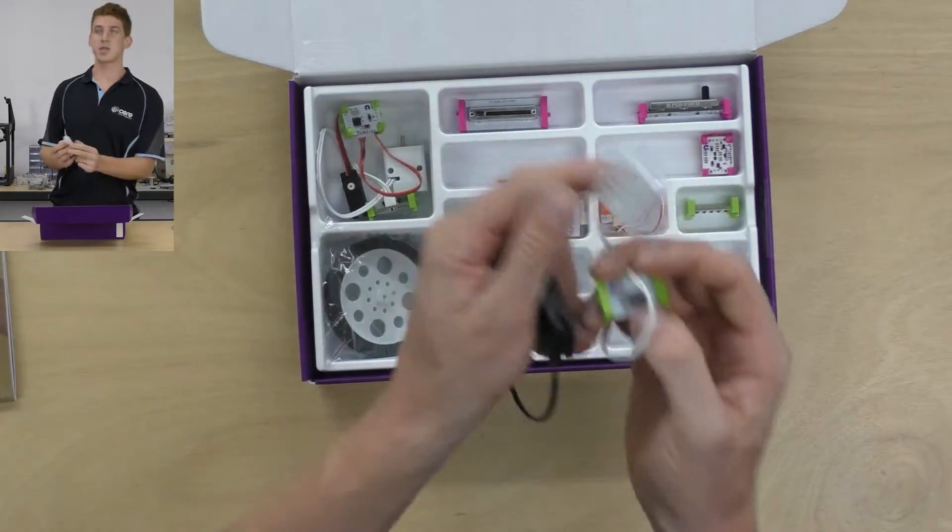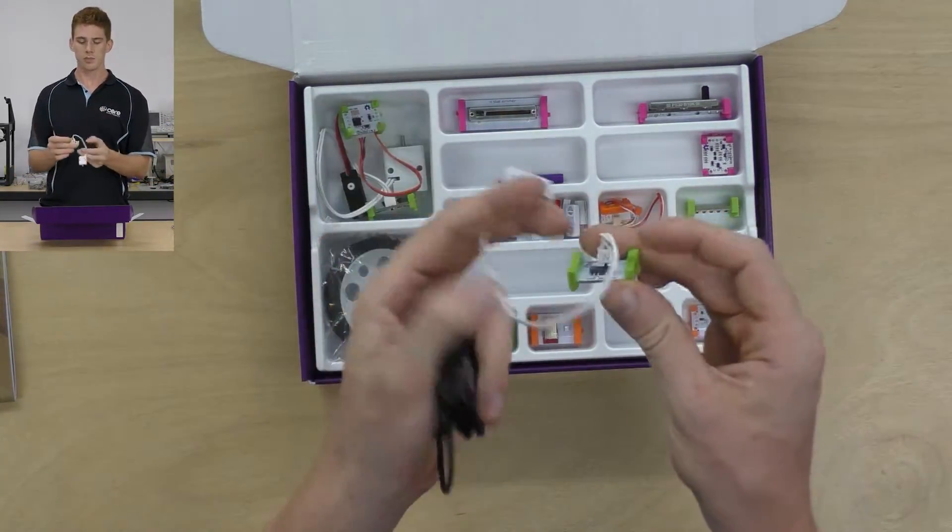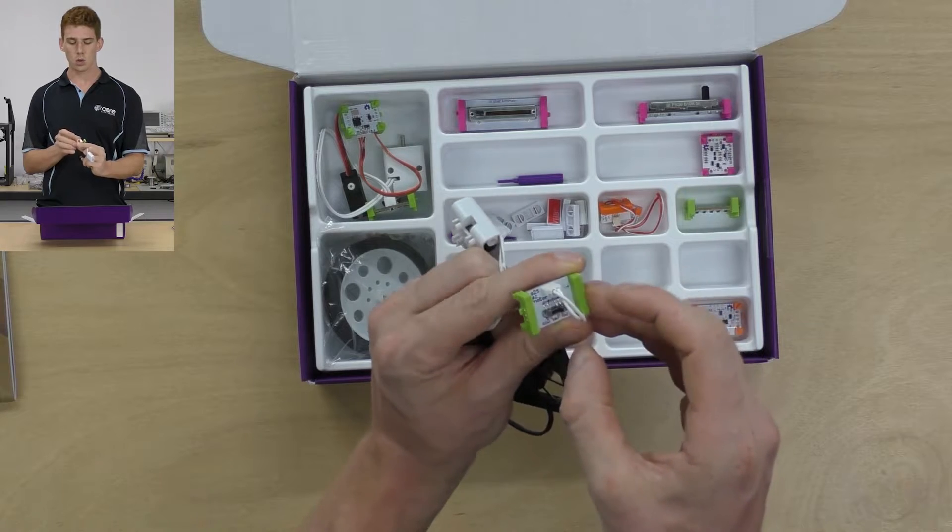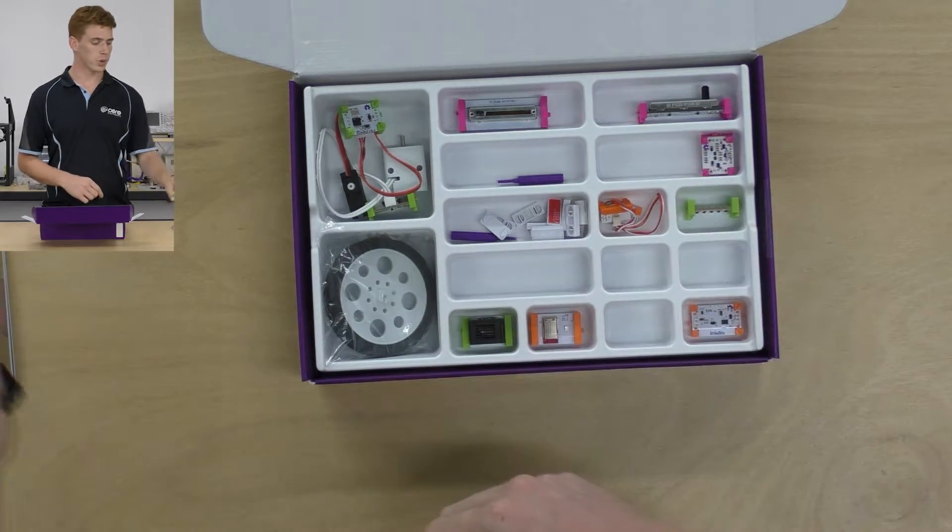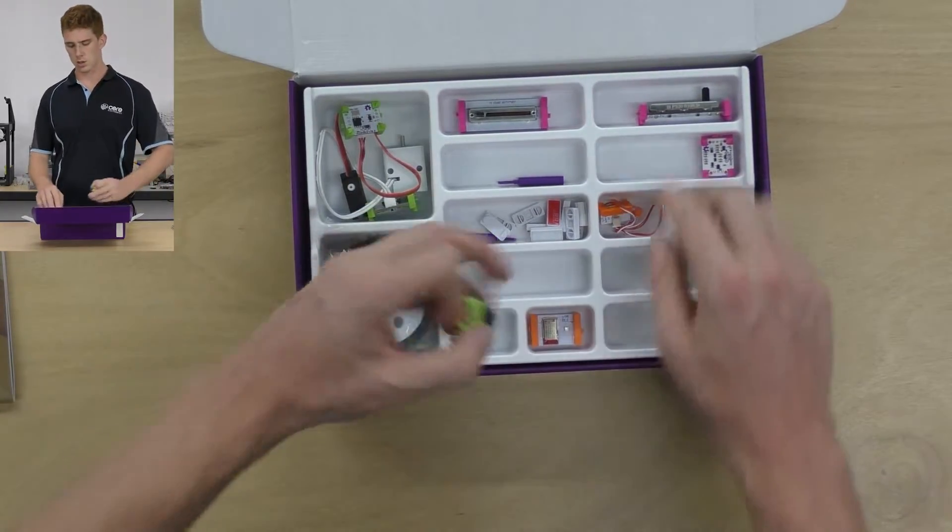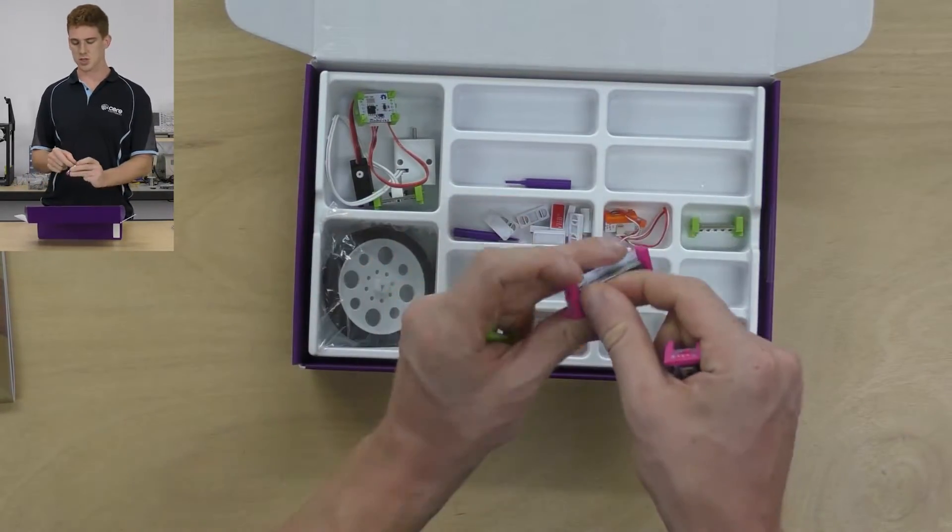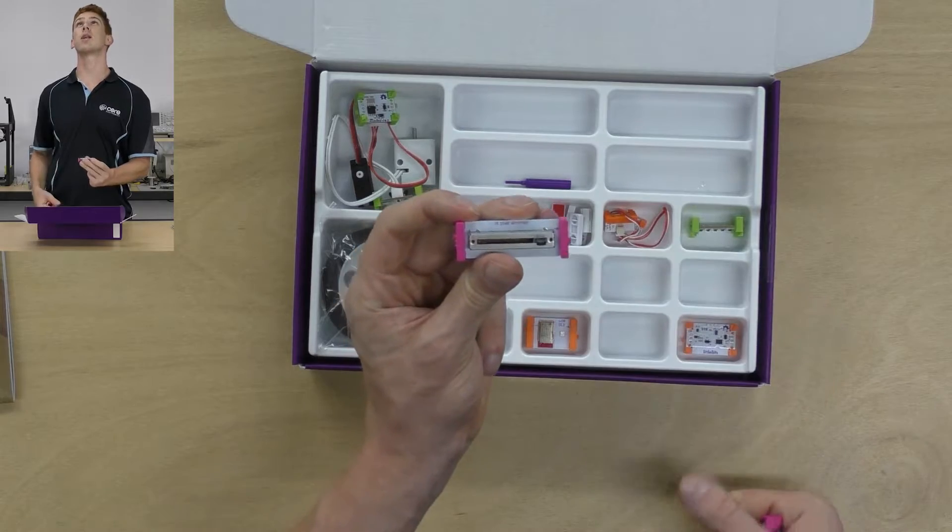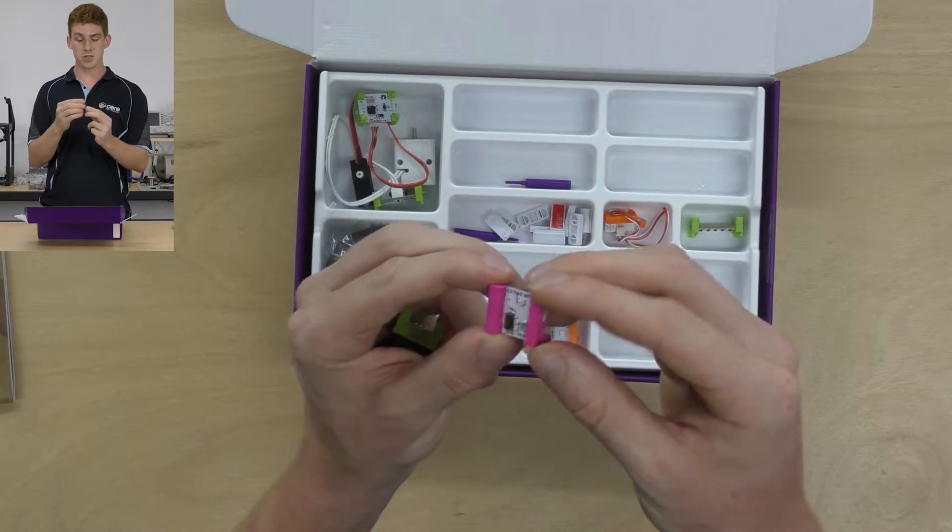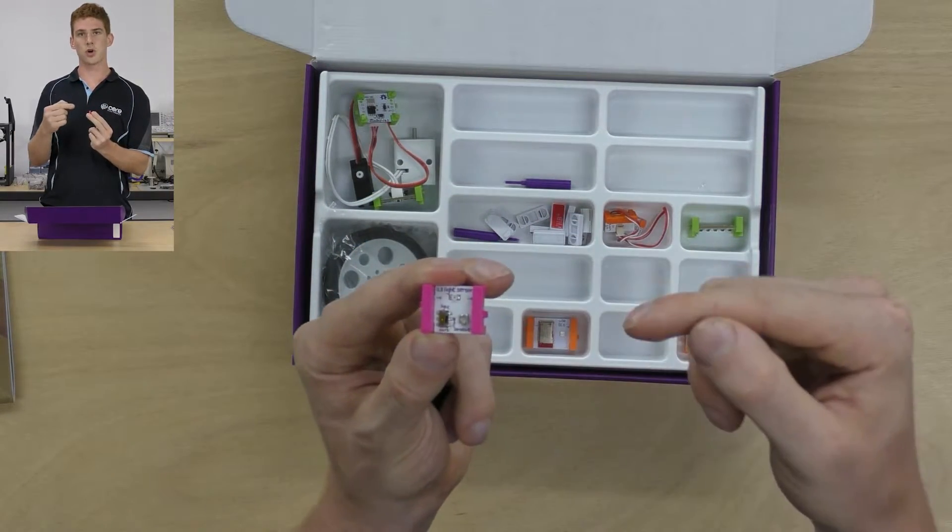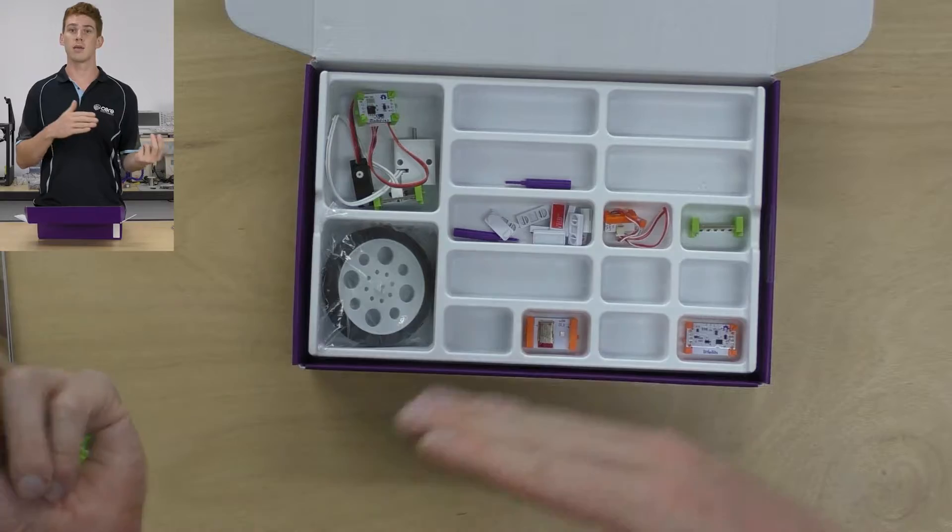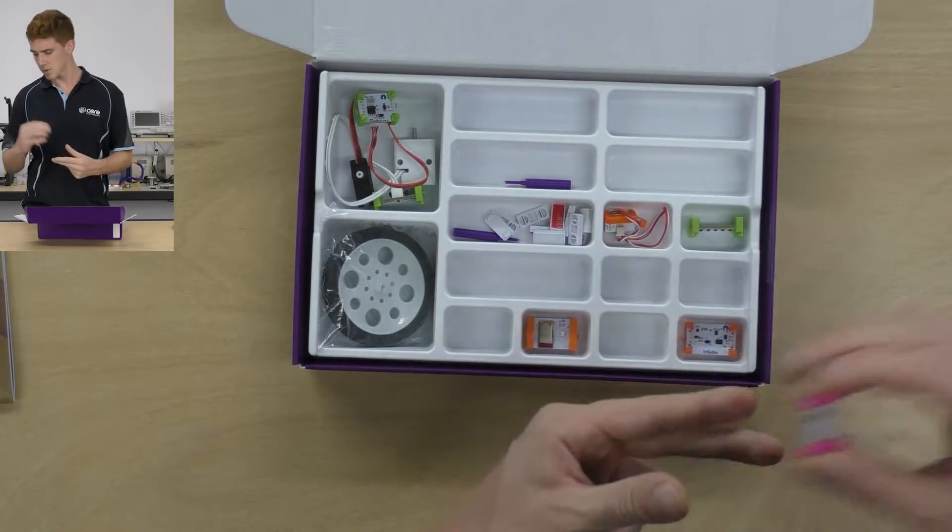Additionally, you've got some green bits. Now, green bits are known as output bits. So, this is a small DC motor here. On the top of the DC motor bit, we've got a switch that allows us to select from counterclockwise to clockwise or a variable direction, which we can control with a pink bit. We've also got a fan, we've got a buzzer, we've got some slide dimmer. So, these are just slide dimming potentiometers so you can control the power level in your circuit.